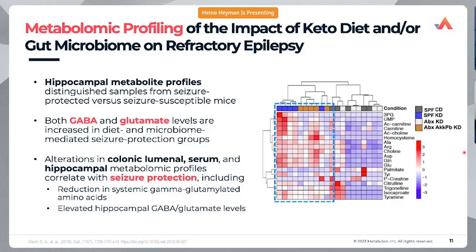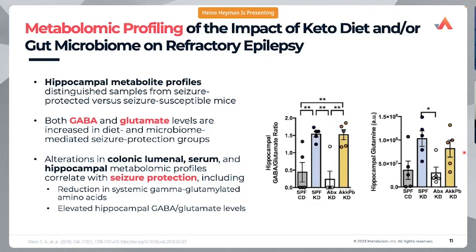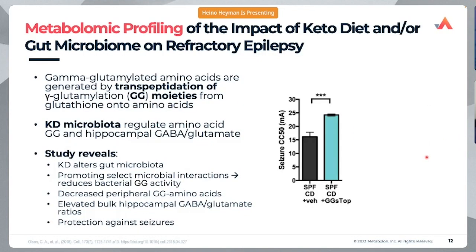Gamma-glutamyl amino acids in particular are hypothesized to exhibit increased transport properties compared to non-gamma-glutamylated forms, so having those elevated in the serum would clearly show a concern as they would be transported more easily to the brain. Both GABA and glutamate levels showed an increase in the diet and microbiome-mediated seizure protection groups, with the GABA-glutamate ratio significantly increased in both ketogenic diet only and microbiome-mediated groups.